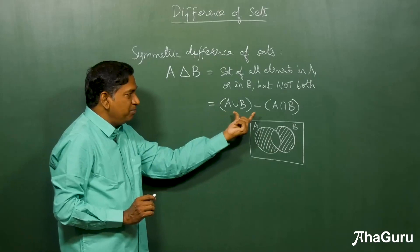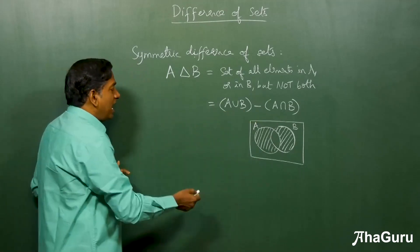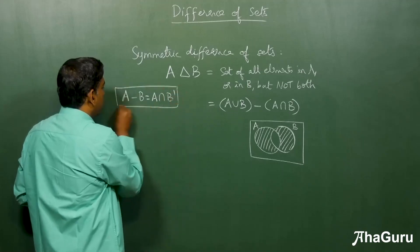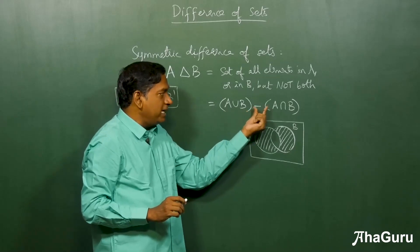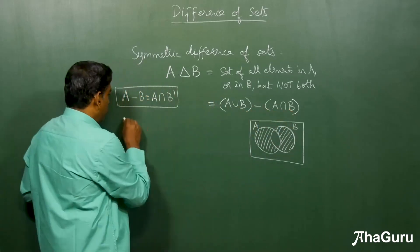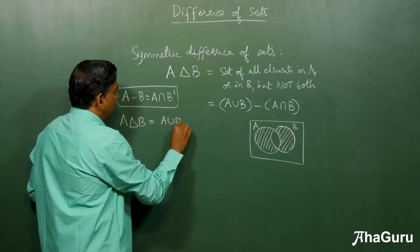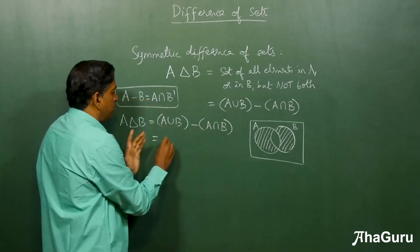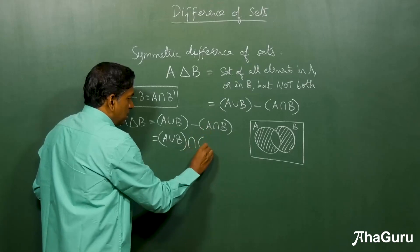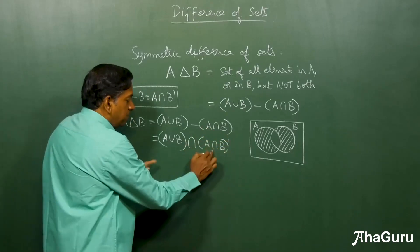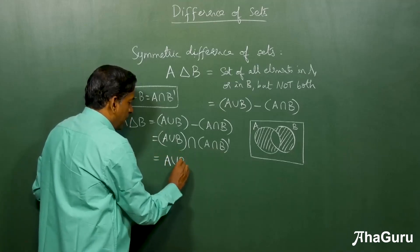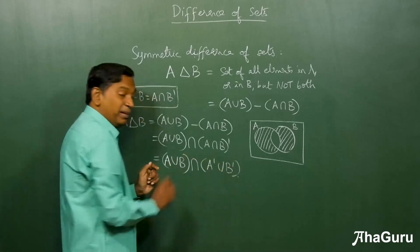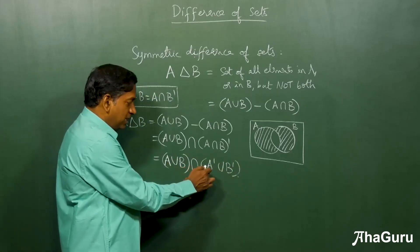Now algebraically, can we simplify this further? We can, because we just saw that A minus B equals A intersection B-bar. So if we take A union B minus A intersection B, we can apply this definition. We can write A delta B as (A union B) minus (A intersection B), which by the definition equals (A union B) intersection (A intersection B) complement. The second part can be simplified using De Morgan's laws, giving (A union B) intersection (A-complement union B-complement).